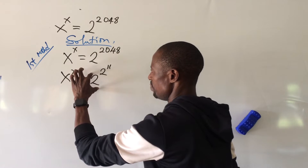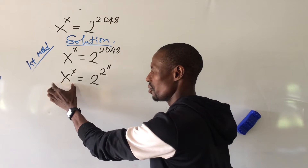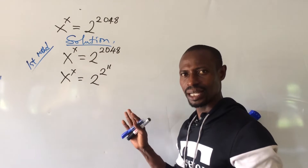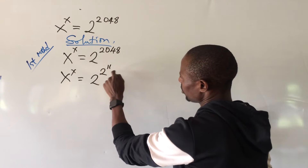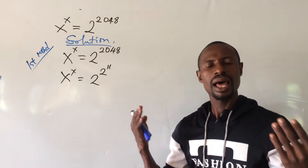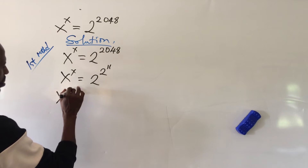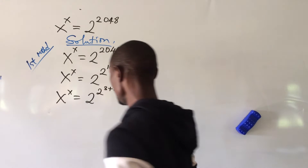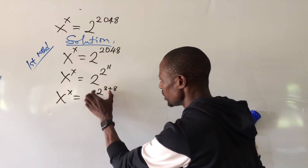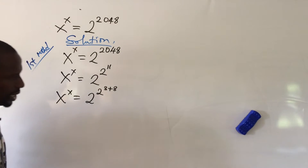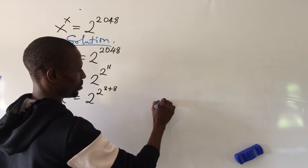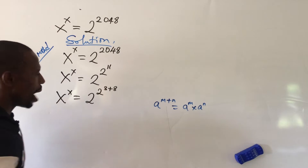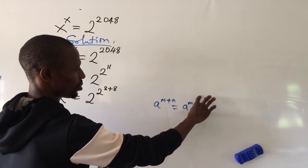Here the base and the power are different, unlike the left-hand side where we have x to its own self. We need to express the base and the power to be the same. So I work on the exponent 11, which can also be written as 3 plus 8. So we have x^x = (2^2)^(3+8). According to the law of indices, a to the power of (m+n) equals a^m times a^n.